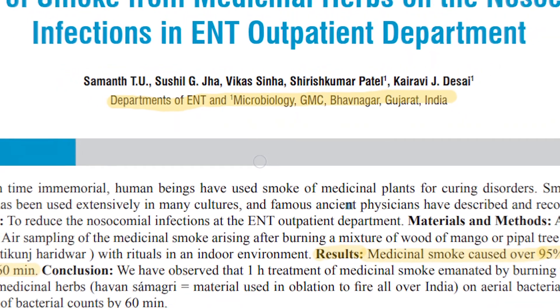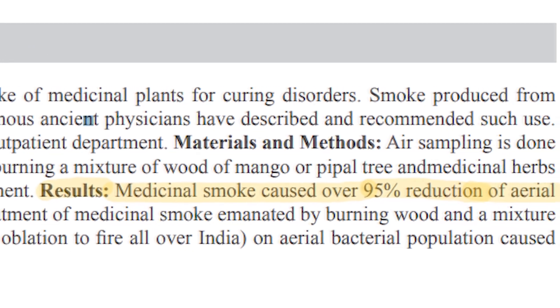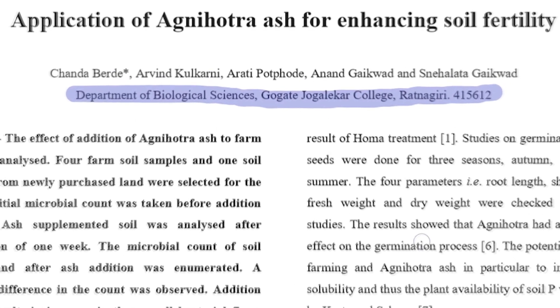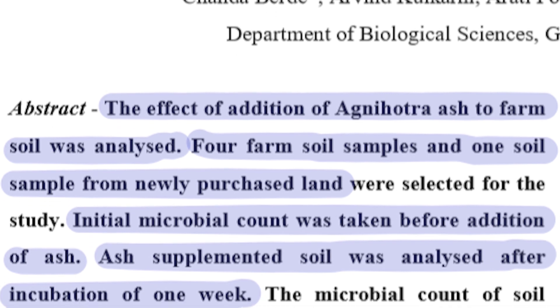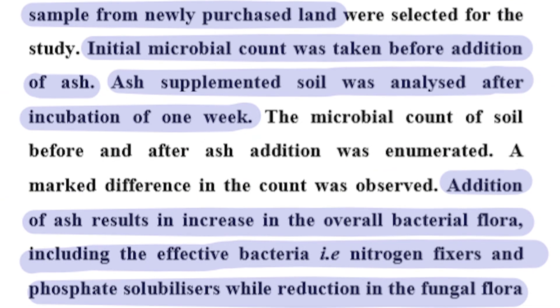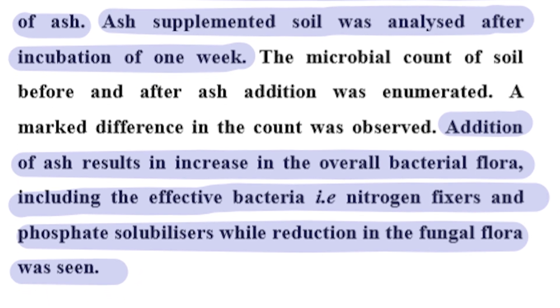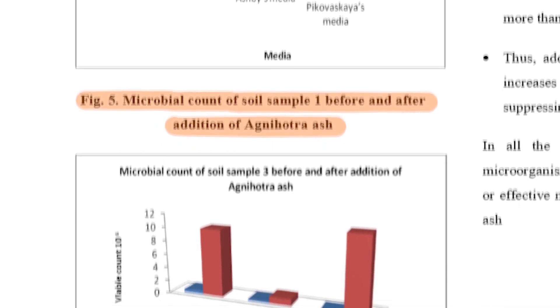With the purest plant, there are many medicinal herbs. Research from the Department of ENT and Microbiology in Gujarat found that when medicinal herb smoke was mixed with milk, ENT infections were reduced by 95% in one hour. ENT stands for eyes, nose and throat. Another research from the Department of Biological Sciences, Gogat Joglaker College, Ratnagiri, found ash in soil. They tested soil samples in 4 places and their fertility increased by 67 to 80%.